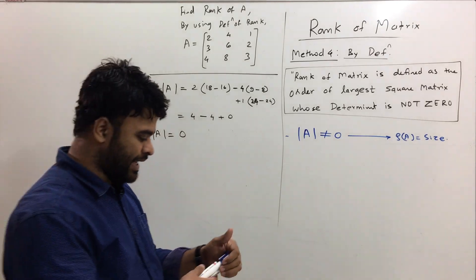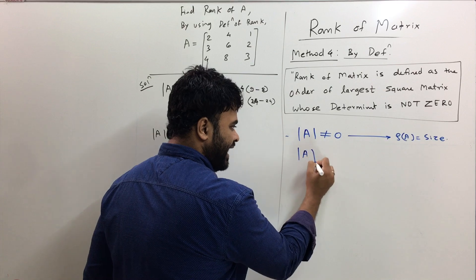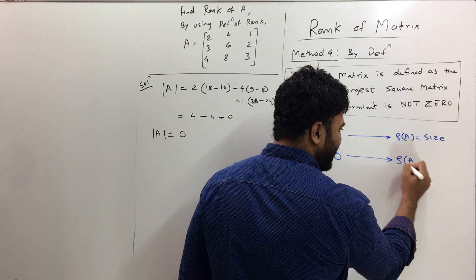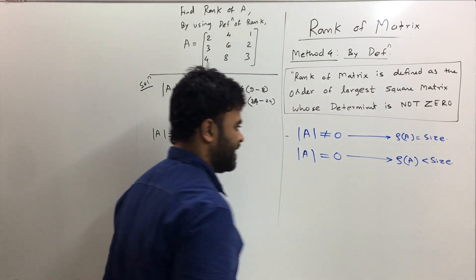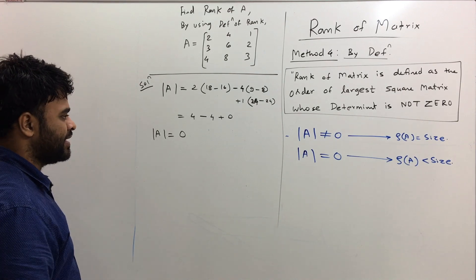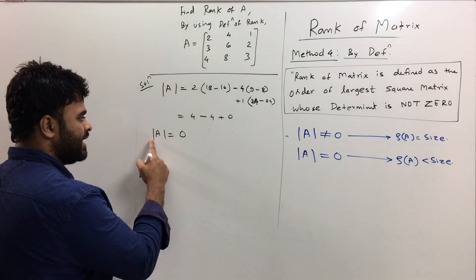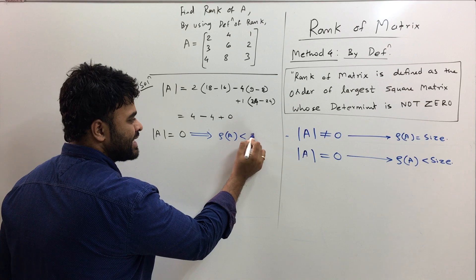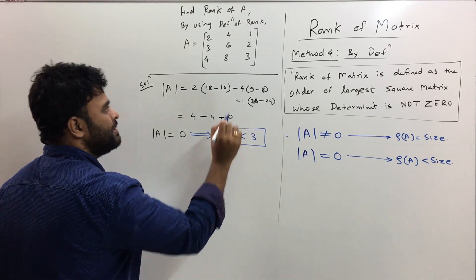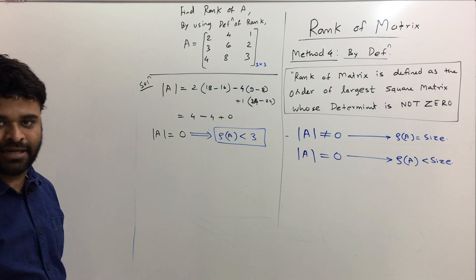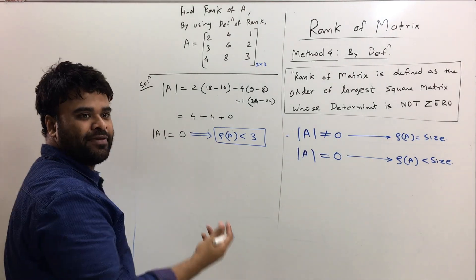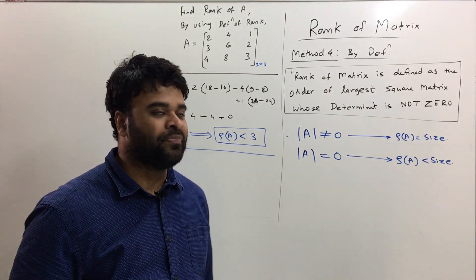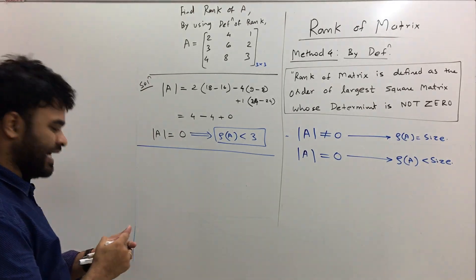Now, if the determinant of A is equal to 0, then the rank of A is less than the size of the matrix. Since the determinant is 0, this implies rank of A is less than the size, and the size is 3 — it is a 3×3 matrix. So the rank is definitely less than 3, meaning it can be 2, 1, or 0.